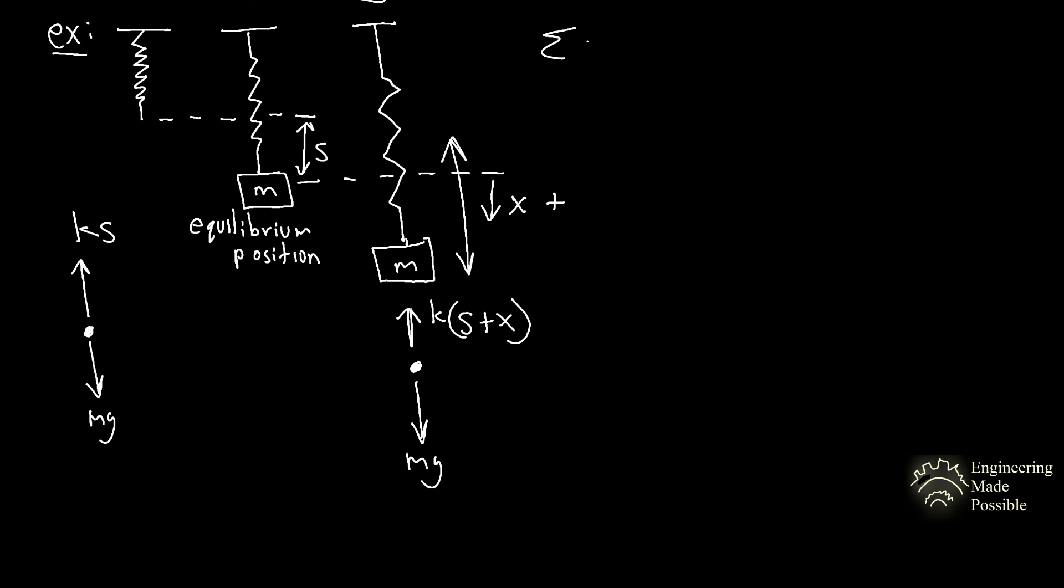We add up the forces in the system with respect to the y direction, right? It's only 1D. So we have your original mg going downward, which is positive, minus k times s plus x.